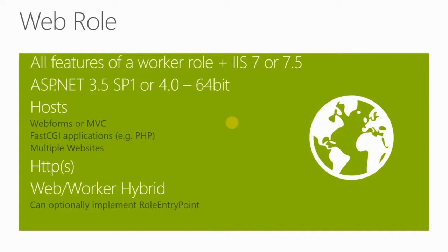A web role is essentially a public-endpoint-capable Windows virtual machine running IIS. It starts out with ASP.NET but you can host PHP, Node.js, and others via FastCGI. You can handle HTTP, HTTPS, TCP connections, and persistent connections using SignalR. At the heart of the web role, IIS manages the lifecycle of whatever's running on it. So if you're running something that sits on top of IIS — Internet Information Services, Microsoft's web server — you're using a web role.